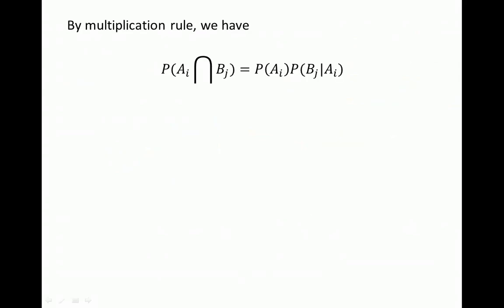By the multiplication rule, the probability of a specific path — probability of Ai and then Bj — equals the probability of Ai times the probability of Bj given Ai. So in the first stage we have some probability for outcome Ai happening, and then given that Ai happened, we have the conditional probability of outcome Bj happening in the second stage.